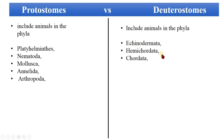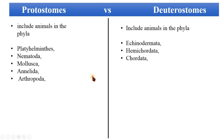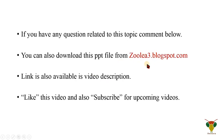The phyla included in the protostomes are Platyhelminthes, Nematoda, Mollusca, Annelida, and Arthropoda. In the case of deuterostomes, we have Echinodermata, Hemichordata, and Chordata. In the next lecture we will discuss further divisions of protostomes and deuterostomes based on different features. You can also download the PDF file from the blog — the URL is given in the description. Please subscribe and like if you support me. Thank you.